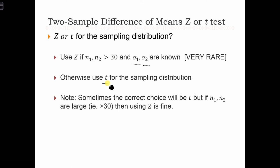So basically, the only time we're actually going to use a t statistic is if either n1 or n2 are less than 30.